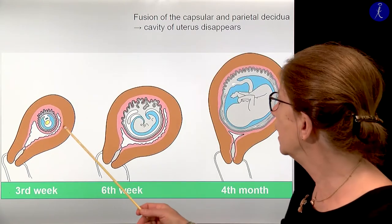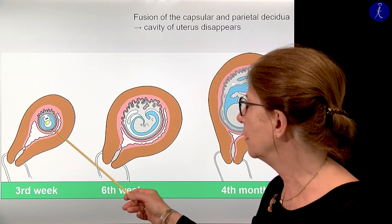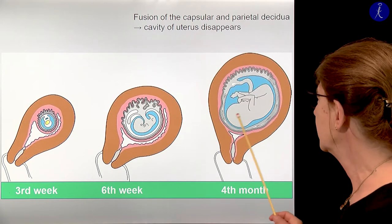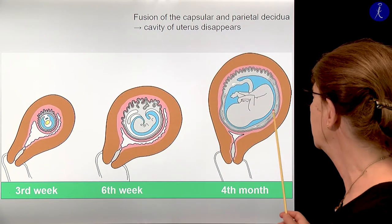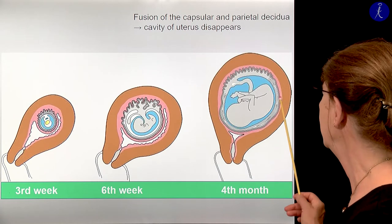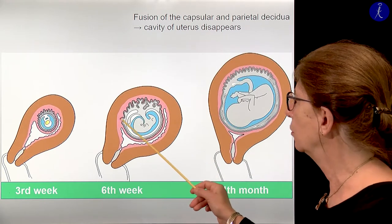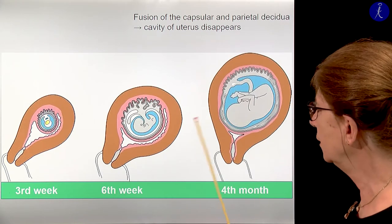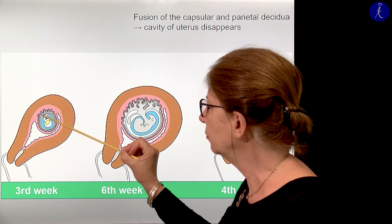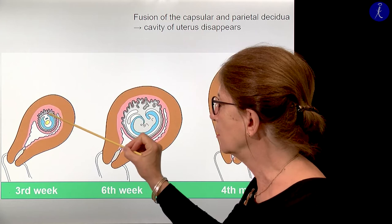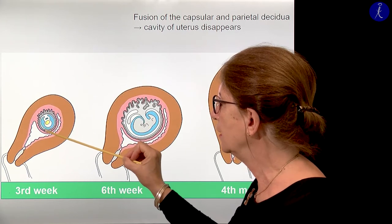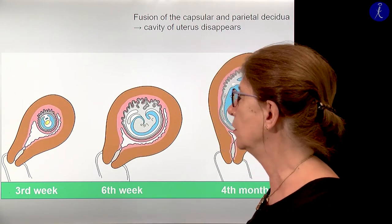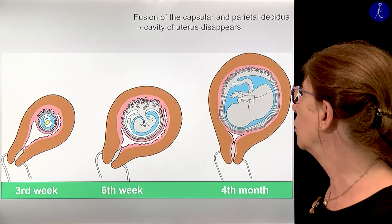For a while, we have a gap between the capsular decidua and the parietal decidua. But as the uterus grows, this will disappear, because the capsular decidua and the parietal decidua will fuse with each other. In the region of the basal decidua, the placenta will form from the chorion frondosum, marked here with gray color. This is the bushy chorion, and the other regions have the smooth chorion. But only this bushy chorion, the chorion frondosum, will take part in the formation of the placenta.